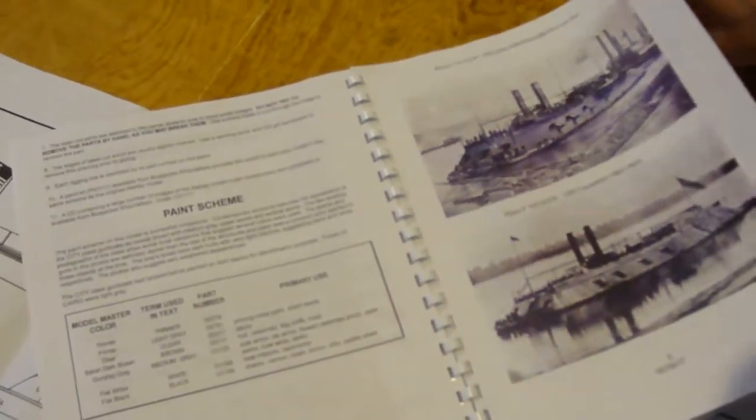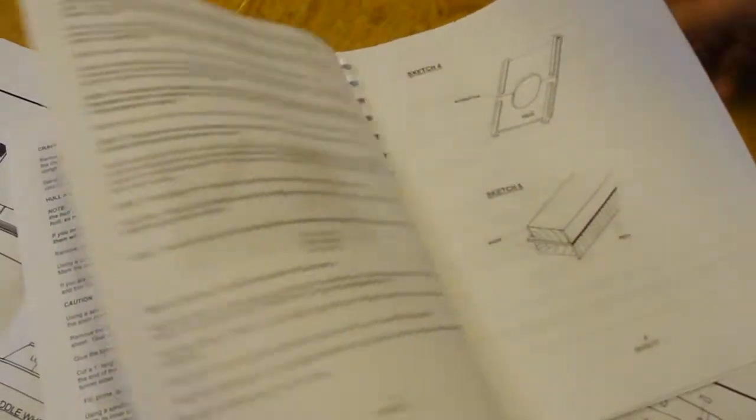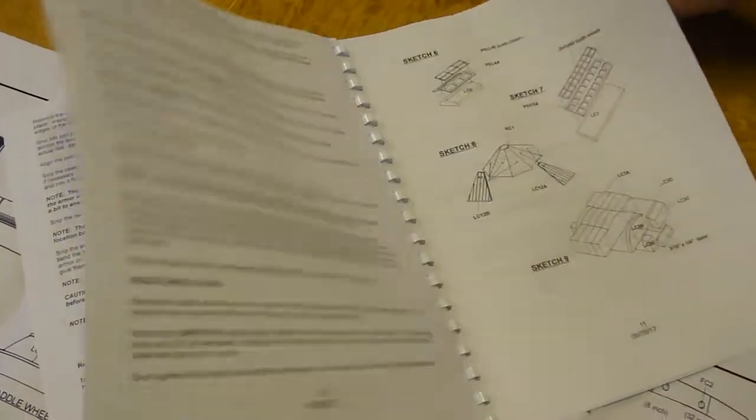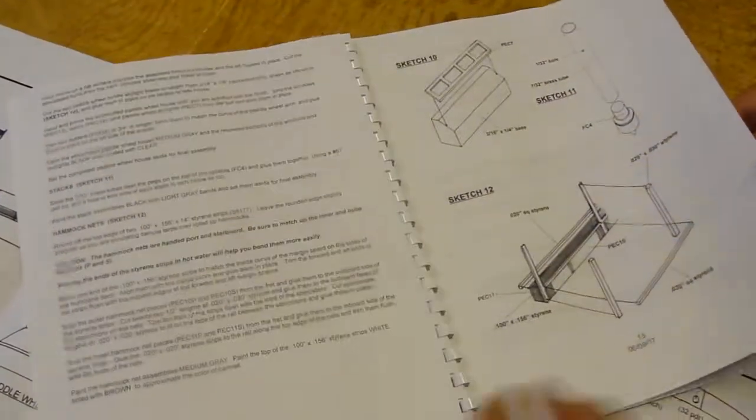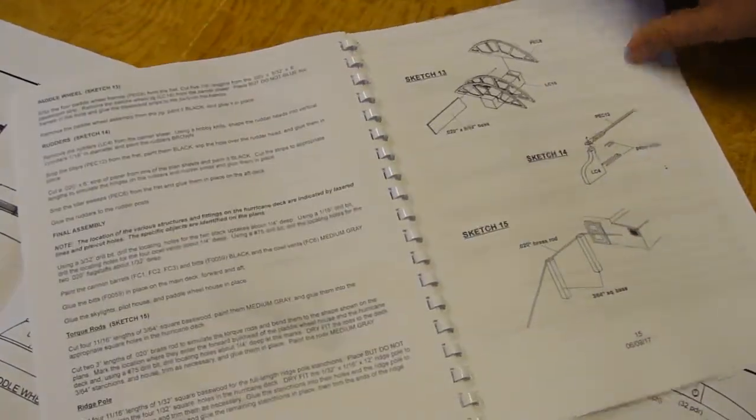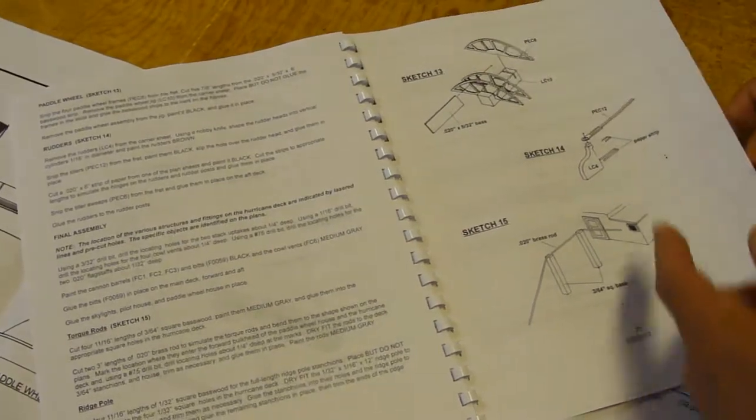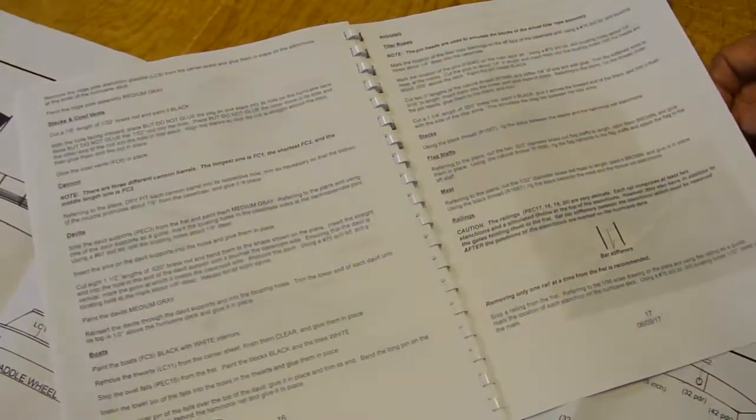The instruction manual includes a couple photos of the city class gunboats and there are isometric diagrams and photographs as well as text to lead you through the construction process. It is a center-mounted paddle wheel boat which is pretty interesting.